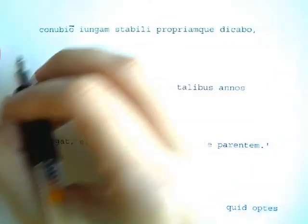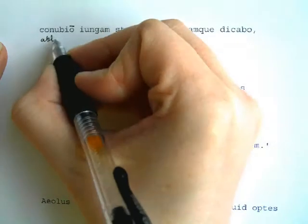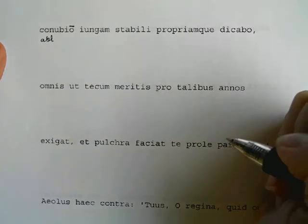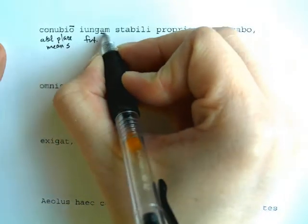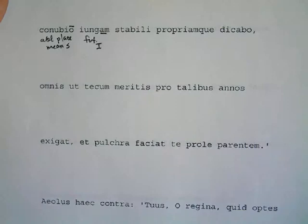Connubio iungam stabili propriamque dicabo. The book tells you connubio is ablative — it's a long -o — an ablative of place or means. Connubium means 'marriage,' so 'in marriage' or 'with marriage.' Iungam: the -am ending is the 'I' form in the future tense, from iungo, iungere, meaning 'to join together.' So 'I will join.' Stabili is also ablative, going back to connubio — what kind of marriage? A lasting marriage.